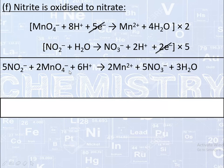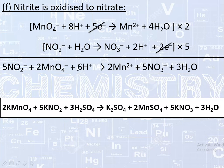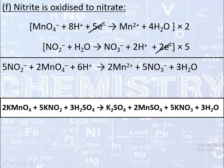Using this equation, we can balance the reaction where potassium permanganate reacts with potassium nitrite (KNO2) in acidic medium to give potassium sulfate, manganese sulfate, potassium nitrate, and water. Balanced: 2KMnO4 + 5KNO2 + 3H2SO4 → 2MnSO4 + 5KNO3 + K2SO4 + 3H2O.